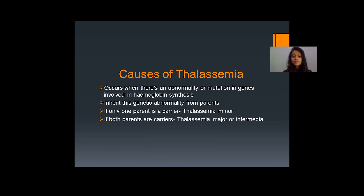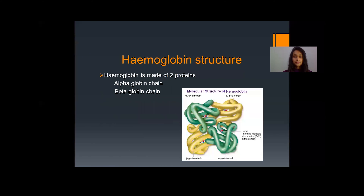If the child receives the defective genes from both parents, the condition is known as thalassemia major or thalassemia intermediate. This is the condition where the signs and symptoms of the disease are exhibited, and thalassemia major is the most severe form of thalassemia.